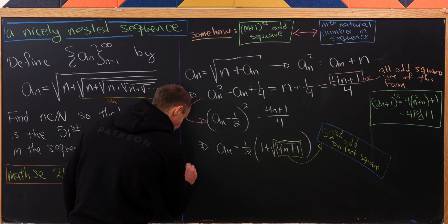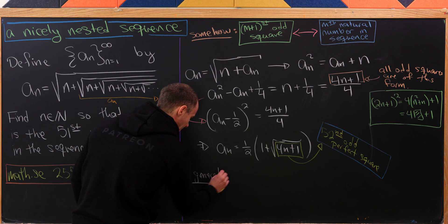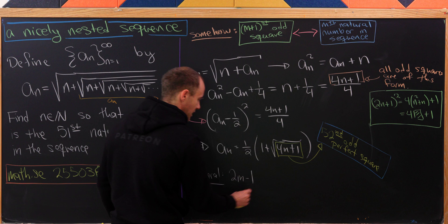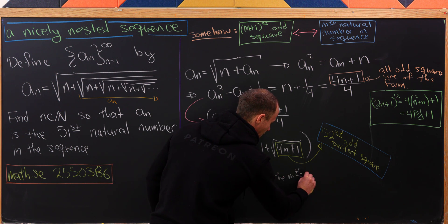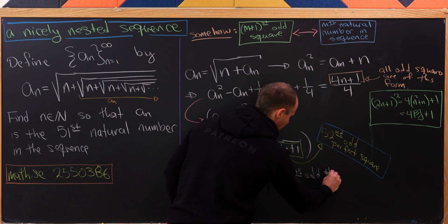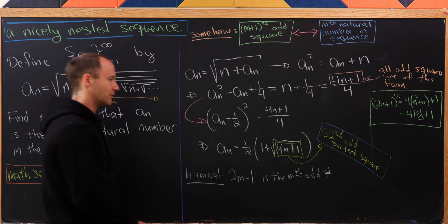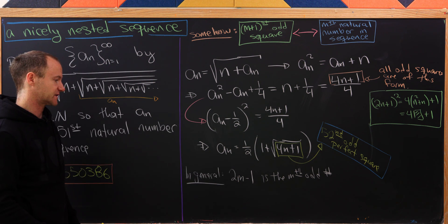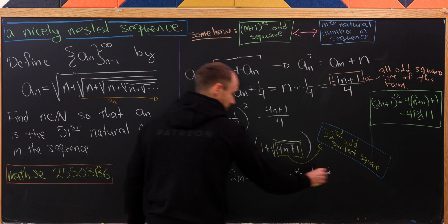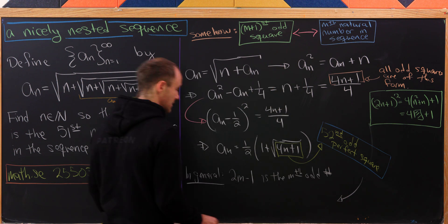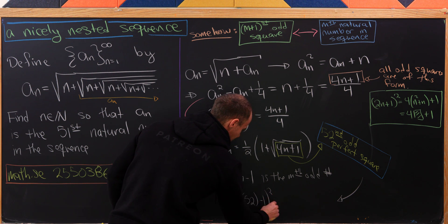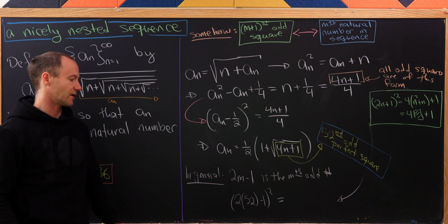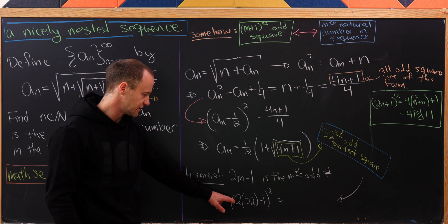So what is the 52nd odd perfect square? I think in general we have 2m - 1 is the mth odd number. But that means if we square it, that'll be the mth odd perfect square. So we can just plug in m equals 52 into here. We have (2 × 52 - 1) squared will be our odd perfect square.